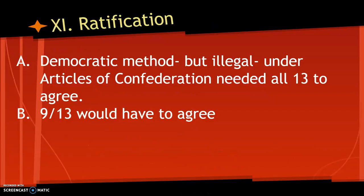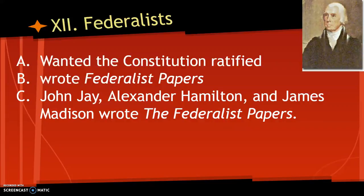When we look at the ratification process, under the Articles of Confederation you needed all 13 states to agree — they knew they could not do that. So they used a method that was technically illegal, saying only nine of the 13 states needed to agree to ratify. The Federalists wanted the Constitution ratified, and to gain support especially in New York, John Jay, Alexander Hamilton, and Madison wrote the Federalist Papers — a series of 85 essays in support of the Constitution. Four of those you'll need to know for the exam in May.